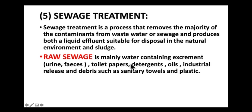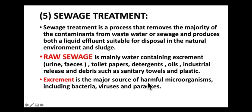Raw sewage is mainly water containing excrement - mostly human urine and feces - as well as toilet paper, detergent from houses and kitchens, oils, industrial releases, and debris such as sanitary towels and plastic. It is therefore important that sewage is treated to remove pathogenic microorganisms and most of the nutrients before it is released as effluent. Excrement is the major source of harmful microorganisms including bacteria, viruses, and parasites. When sewage has been treated, the water in it can be used again - sewage treatment enables water to be recycled. If we did not recycle water in this way, significant water shortages would occur in many parts of the world.